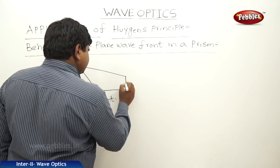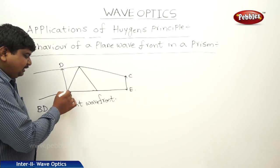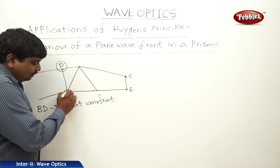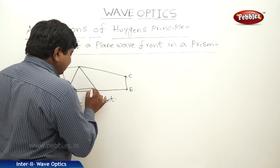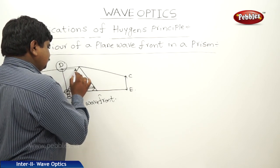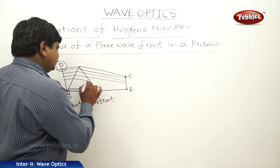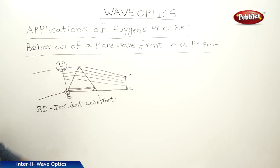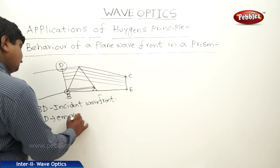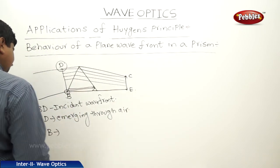Here we are getting a wavefront CE. Two wavefronts appear: one due to point B and one due to point D. The wavefronts emerging from point B travel the entire length or surface of the prism — a large distance — while the wavefronts due to point D travel the least distance through air.